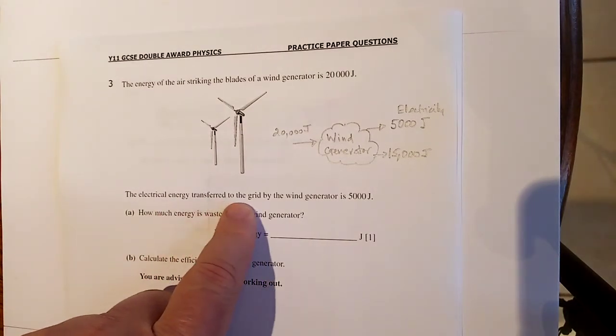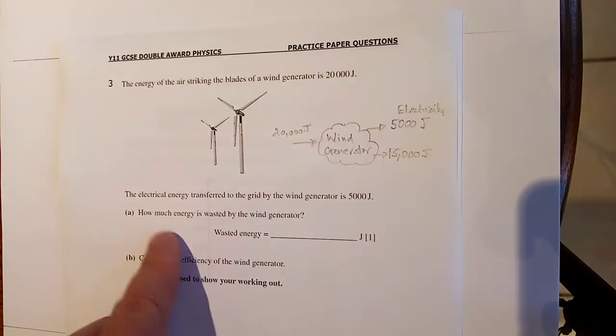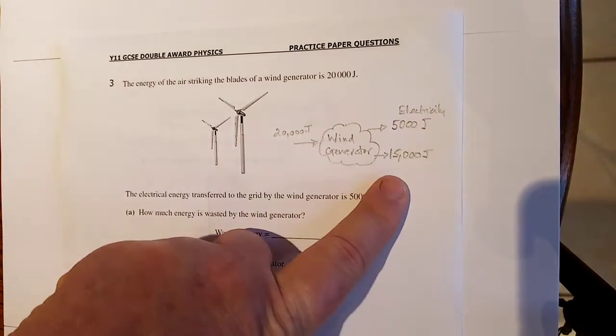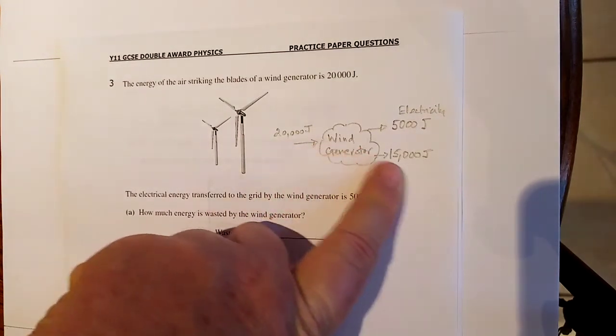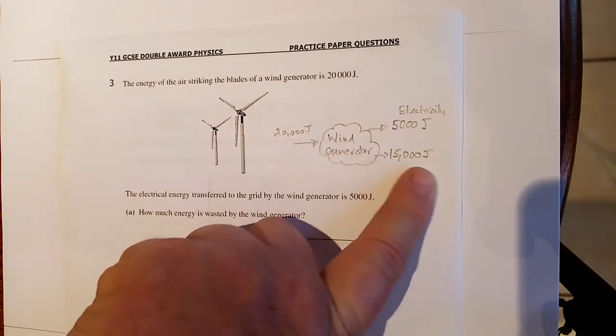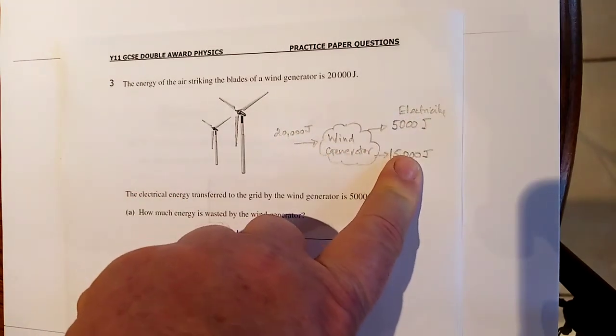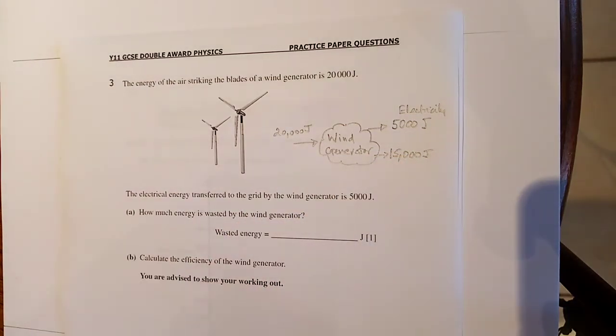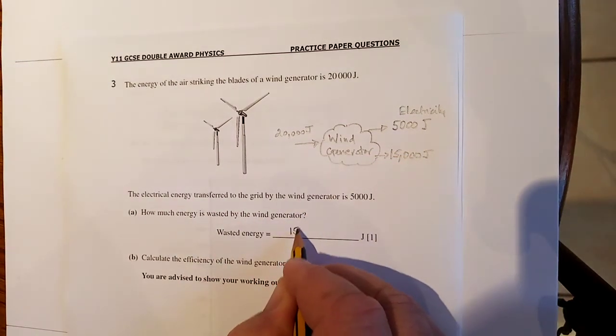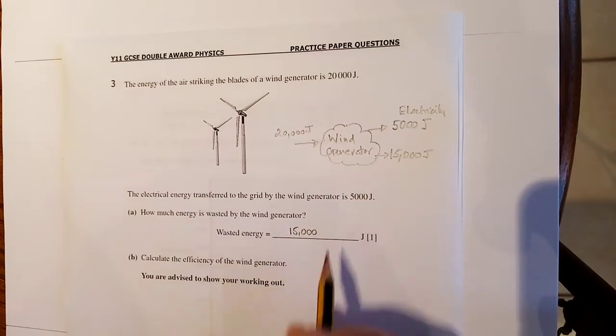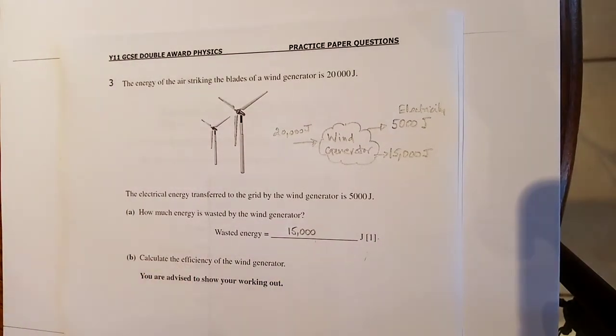Right. So there's your spade work done for this one. The electrical energy transferred to the blade by the wind generator is 5. How much energy is wasted? There's it there. Yes. There's our energy diagram. Energy in equals energy out. What's that really? Conservation of energy. So there's 15,000 joules of energy wasted. One mark, one answer.